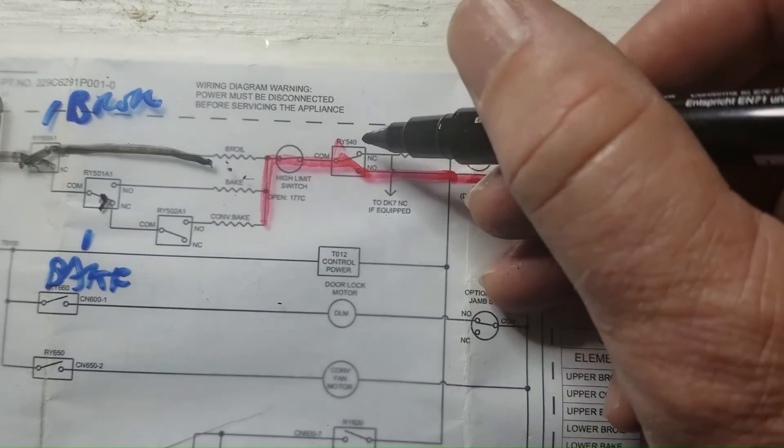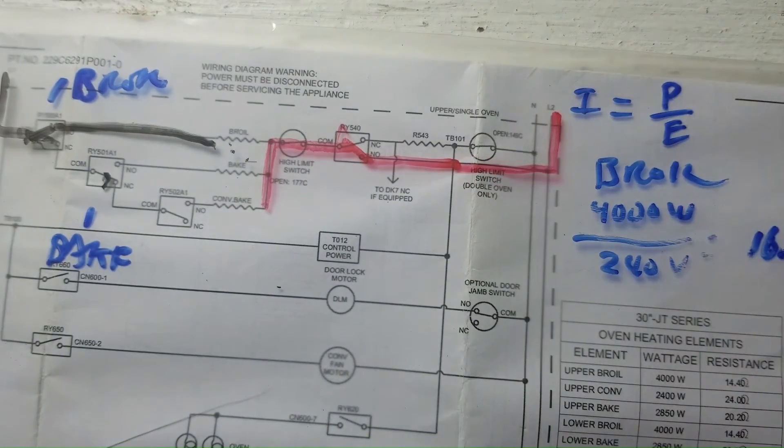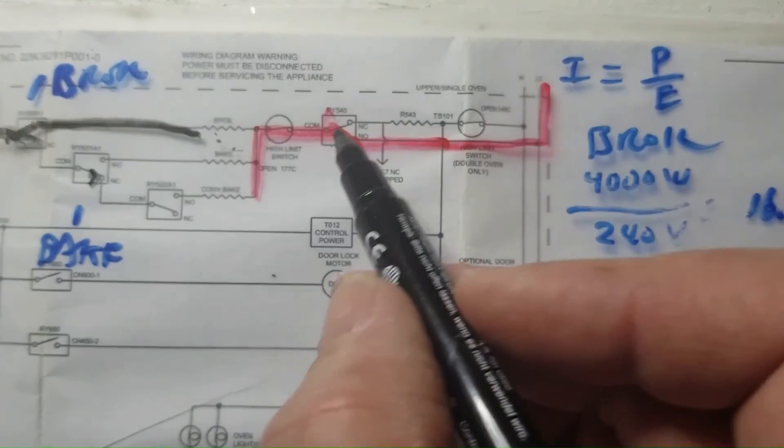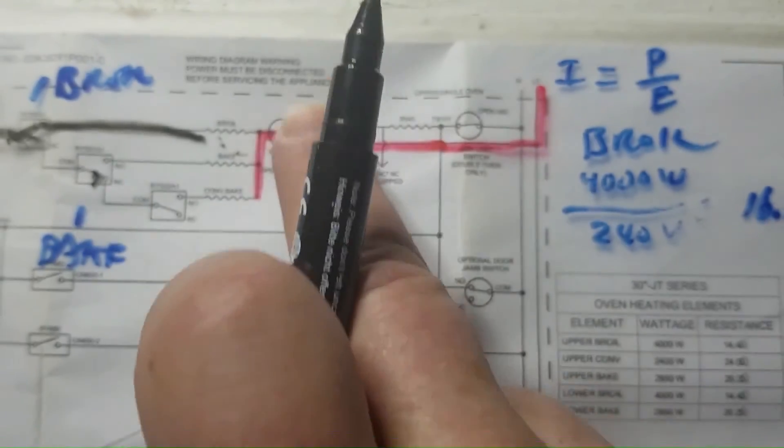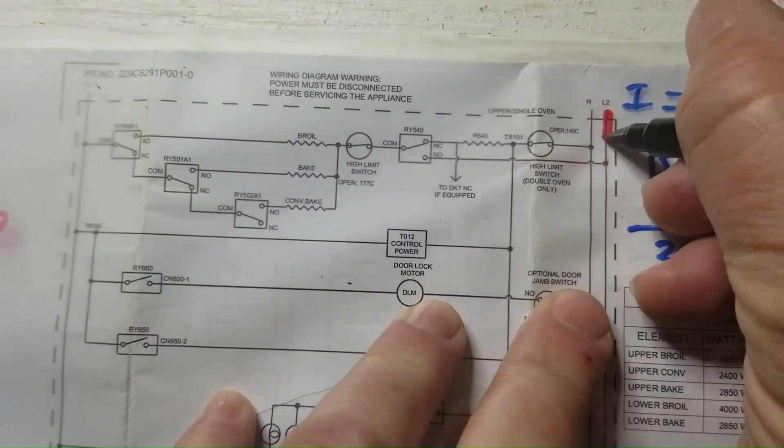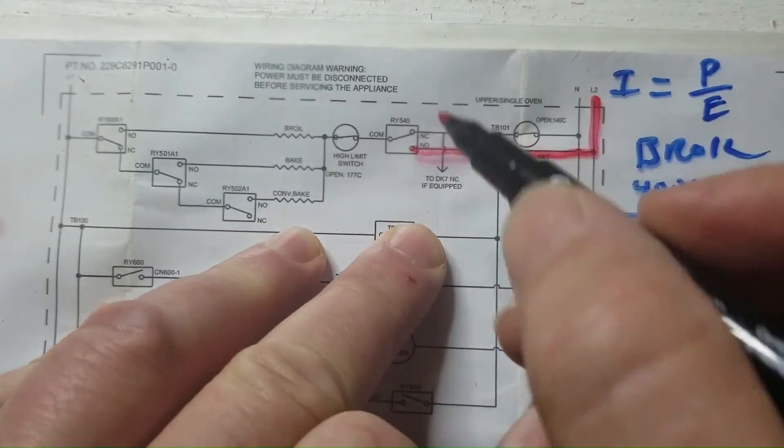So very obviously to me, this broil relay is bad. The DLB is just a safety relay. What happens is when you get an F20 error, this safety relay will open up and break this circuit so that you have no more voltage over here, even though this is stuck. So that's a safety relay.